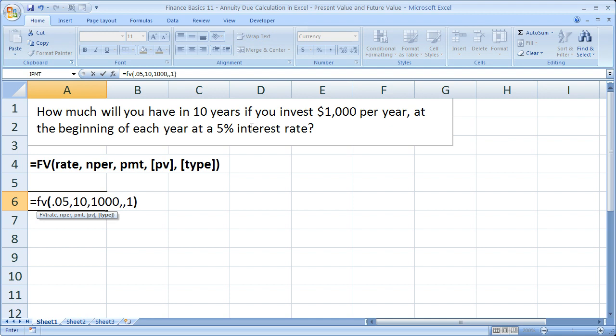So we put a close parenthesis, and I'm going to put a negative sign in front of the future value here just so we get a positive number. If you've watched the other finance basics tutorials, you know there are a couple different ways to do this. I prefer in simple cases like this to put the negative in front of the future value function.